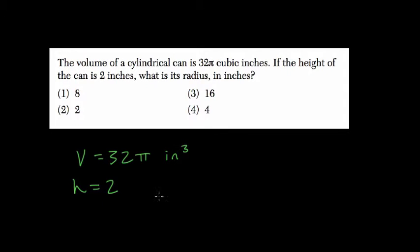Well, this is just a basic algebra problem because volume of a cylinder is πr² times the height. And here they're saying the height is 2, and they want us to find the value of r. But this volume is equal to 32π.